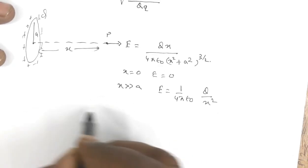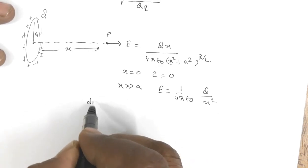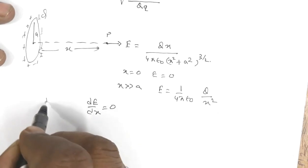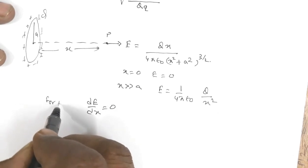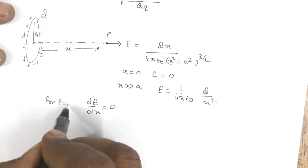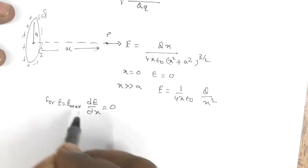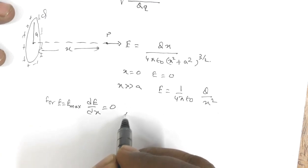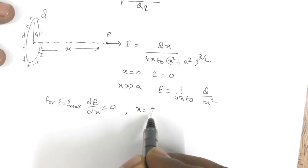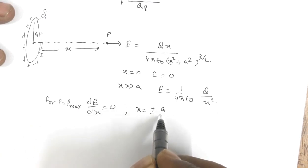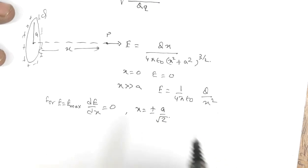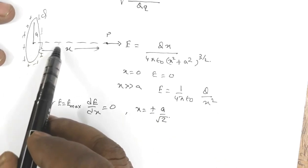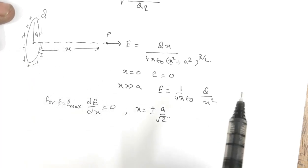For the maximum value of electric field, again you find dE/dx = 0. This value comes to x = ±a/√2. So at distance a/√2 in this direction and a/√2 in the other direction...